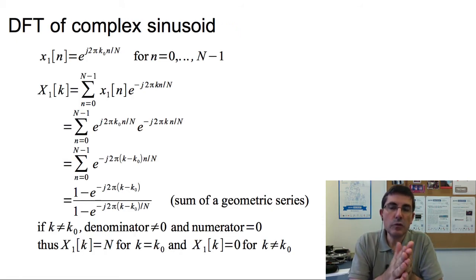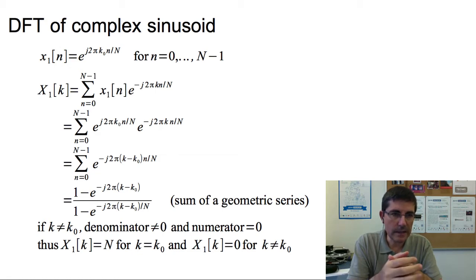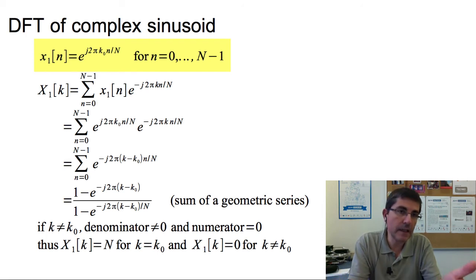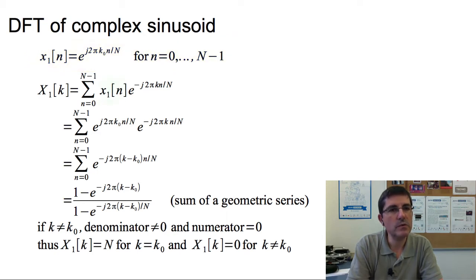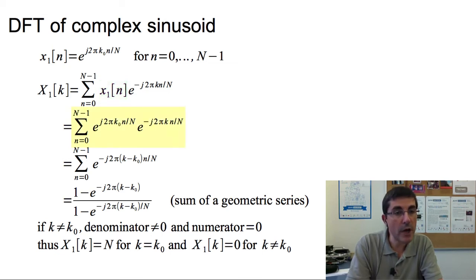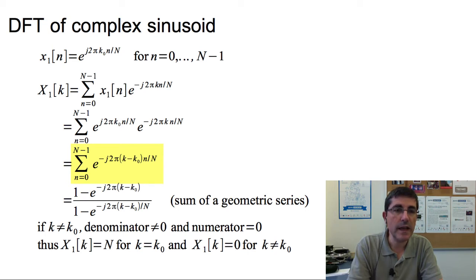To understand this concept better, let's compute the DFT of one single complex sinusoid. We start from an input signal x sub 1, which is defined as a complex sinusoid of length capital N, with a given frequency expressed by the index k sub 0. We substitute this input signal into the DFT equation, giving us a product of two complex sinusoids. We can sum the exponents to obtain a single complex sinusoid with a combined exponent, and this is in fact the sum of a geometric series, which has a closed form expressed by this equation.